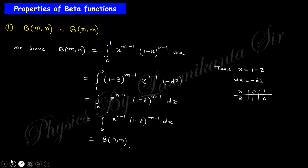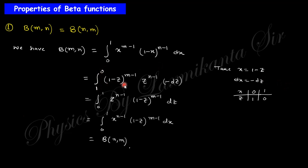The first property is symmetry: Beta(m, n) = Beta(n, m). Starting from the definition — the integral from 0 to 1 of x^(m-1)(1-x)^(n-1) dx — substitute (1-x) = z, so dx = -dz. Changing the integration limits and rearranging, the minus sign interchanges the limits. Using the dummy variable rule, we can rename the variable back to x, giving us Beta(n, m). So Beta(m, n) = Beta(n, m).